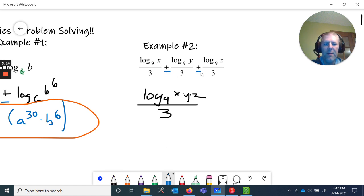As log base nine of x times y times z all over three. Since these are added together, we can condense that by multiplying, so that's x times y times z. Since this is a one-third, I'll just take that extra step here. Log base nine of x times y, my mouse skills are lacking at the moment I apologize.